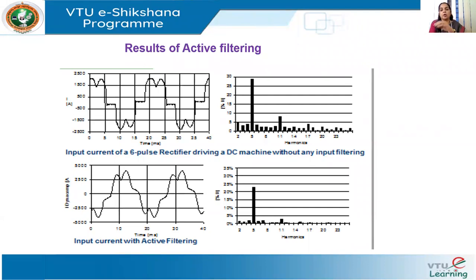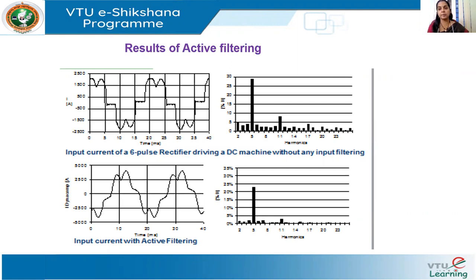Now we have seen all types of filters: normal single-tuned or untuned filters such as line chokes or reactors, single-tuned filters for one particular frequency component, shunt passive filters, series passive filters, and C filters mainly used for mitigating interharmonics. We also saw active power factor filters. Depending upon the application and requirements, we can choose any filter from this set.